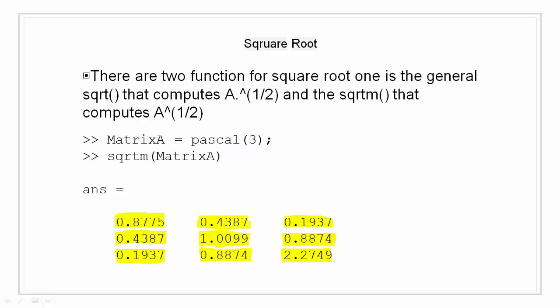Square root. For square root, there are two functions. That is, square root SQRT that does an element by element square root of matrix A, and square root matrix SQRTM that does the square root for the matrix as a whole.